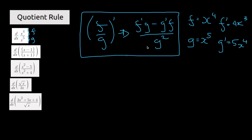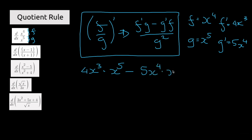So let's write this expression using these terms. f prime is 4x to the power of 3 multiplied by g which is x to the power of 5, minus g prime which is 5x to the power of 4 multiplied by f which is x to the power of 4, and then all of this divided by x to the power of 5 squared.